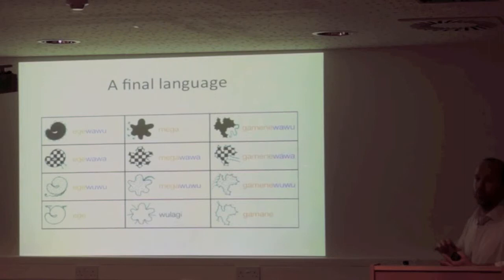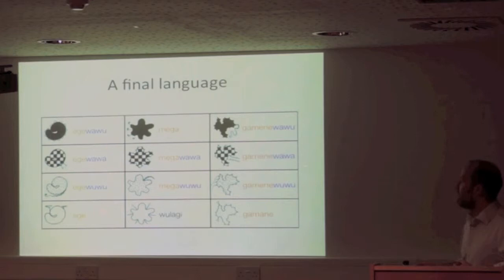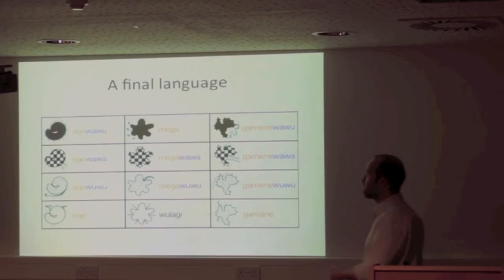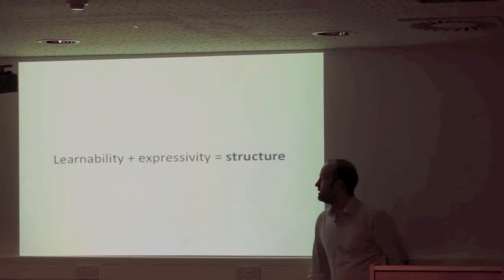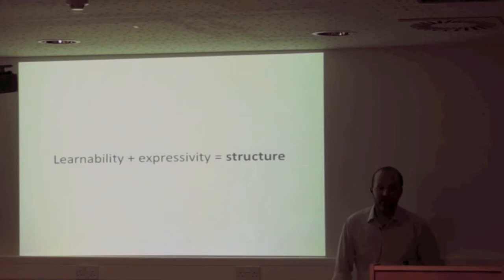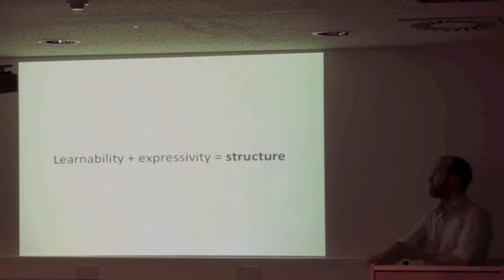The initial language is holistic — a distinct but arbitrary label for every picture, no structure. Plugging this in and coming back six generations later, you get a language with a very simple compositional morphology. Most labels have two parts: the first encodes shape and the second encodes fill pattern — roughly 'wah-woo' for black, 'wah-wah' for hatched, 'woo-woo' for dotted — with some exceptions. The language now has basic words for shape and fill combined in a rule-governed way. With both learnability and expressivity pressures present, you get linguistic structure.